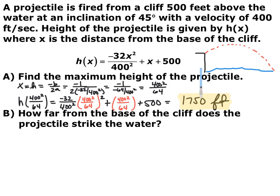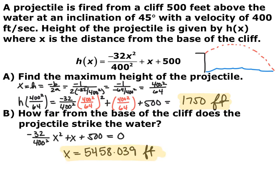Part b wants to know how far away from the base before the projectile hits the water. You'll probably need a graphing calculator for this. Since you want where the projectile hits the water, that means the height off the water should be 0. So I set the original function equal to 0 and plugged it into my calculator to find where it intersects the x-axis. You end up with an x-coordinate of 5,458.039 feet — so a little under 5,500 feet away from the cliff, it's going to hit the water.